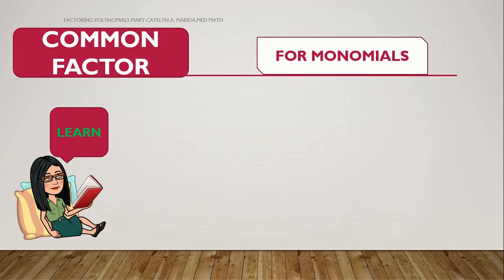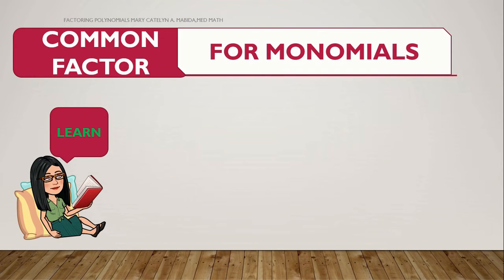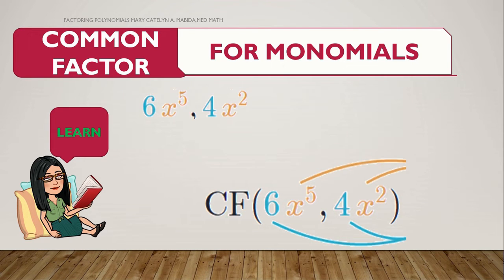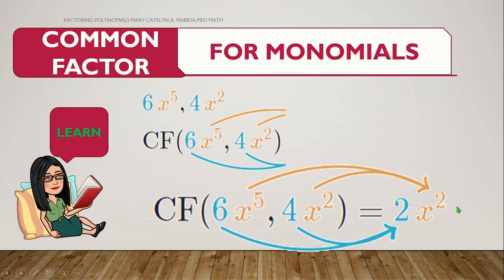Now, what if we have monomials? How do we get the common factor for monomials? Say, for example, we have 6x to the 5th and 4x squared. Now, focus your attention on the blue and the yellow lines. These mean that we factor our numbers and coefficients separately. So, 6 and 4, their greatest common factor is 2. And x to the 5th and x squared, their greatest common factor is x squared. Now, multiplying them, we get 2x squared.